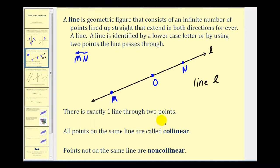A couple more things to mention about a line. There's exactly one line through two points. So if we consider the points M and O, there's only one line passing through those two points and that's the one pictured here. There are no other lines that will also pass through those two points. Next, all the points on the same line are called collinear. So points M, O, and N are all collinear because they're all on the same line.